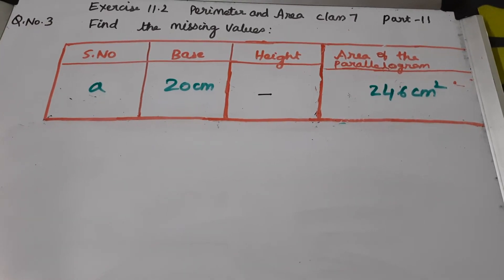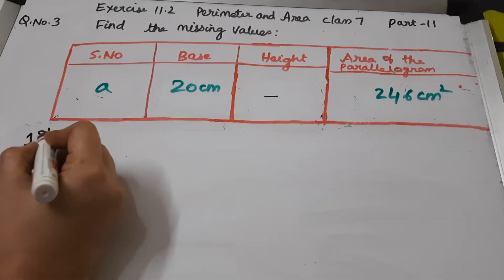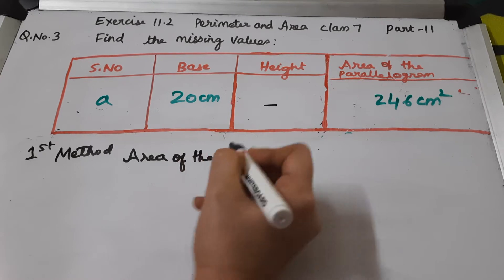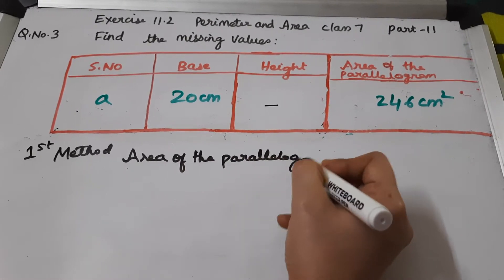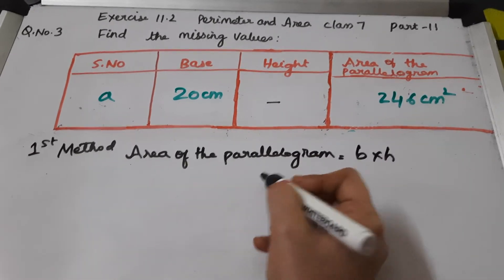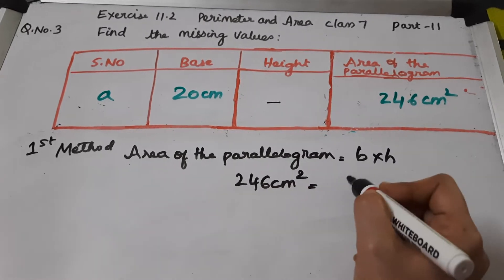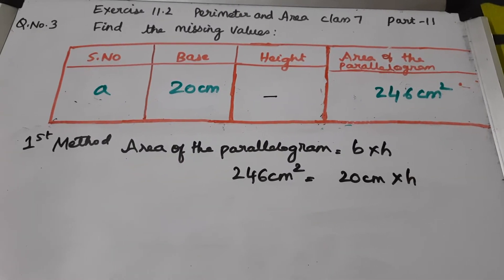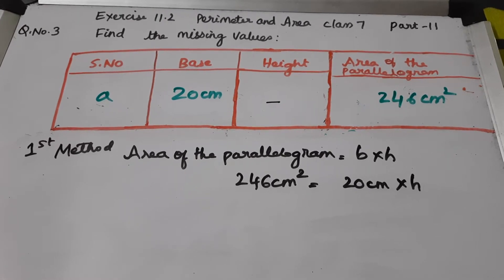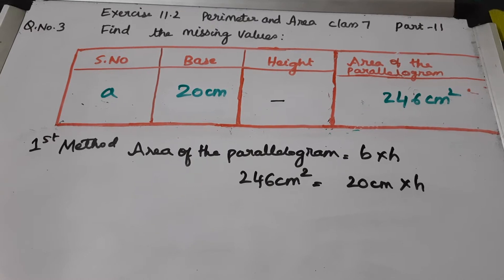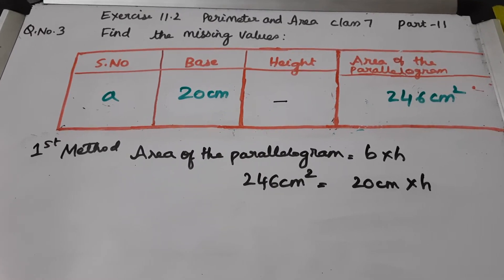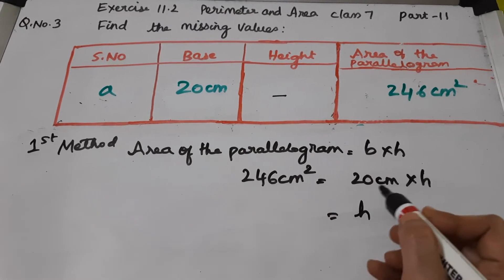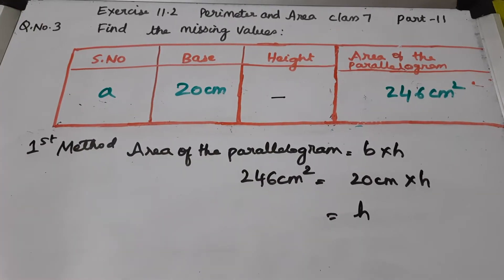You can find the answer to this bit using two methods. Let me first tell you the first method. Area of the parallelogram is equal to base into height. Area is 246 centimeters square. Base is 20 centimeters. Height we need to find out. We know that in linear equation one variable, when the variable is not given to you, you take it as x. Here height is not given, we are taking it as h. So h equals - now since it's multiplying 20 centimeters into height, when it goes to the other side it divides.